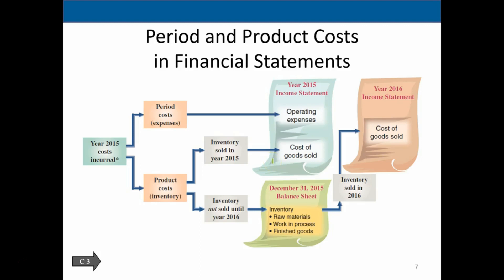That asset becomes inventory. If the inventory is sold in 2015, we will expense that labor, overhead, and direct materials in the form of cost of goods sold. It will be expensed, but not until it's sold. If the inventory is not sold — the car is still sitting on the lot or not completed at the end of 2015 — then it's going to be in ending inventory, including wages and depreciation from the manufacturing process. Hopefully it will be sold in 2016, at which time we will expense all that information as cost of goods sold.